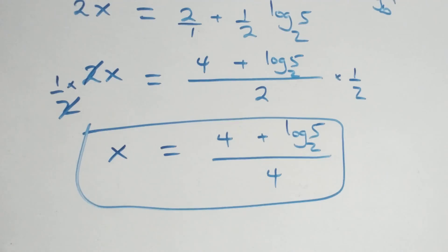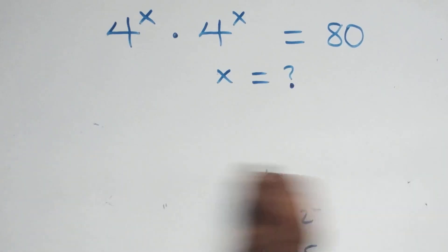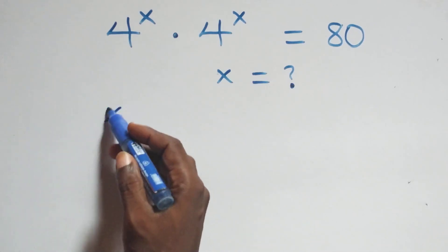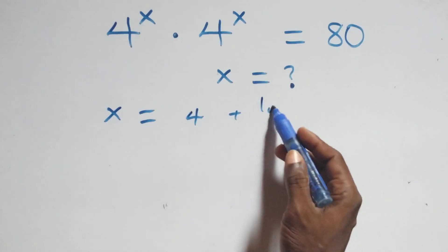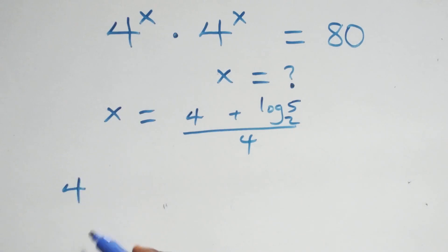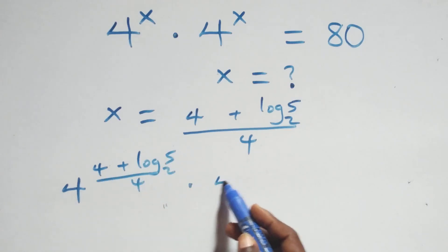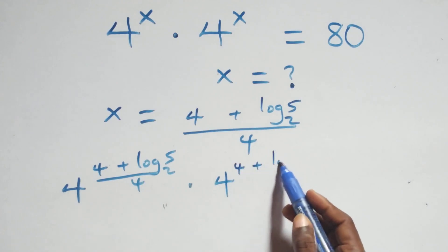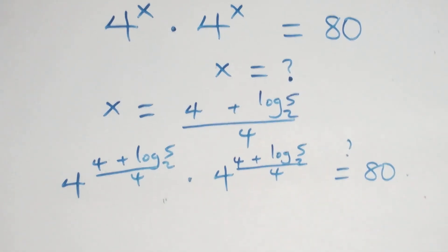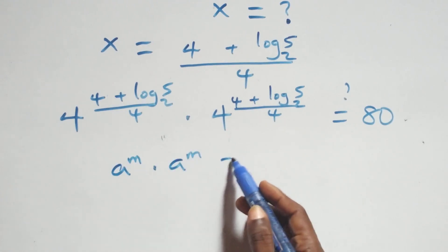That is the value of x: x equals 4 plus log 5 base 2, over 4. Now let's check if this satisfies the given problem by substituting the value of x. Substituting x equals (4 plus log₂5)/4, we have 4 raised to power (4 plus log₂5)/4 times 4 raised to power (4 plus log₂5)/4 equals 80. Since we have the same base multiplying with the same power, a raised to power n times a raised to power n equals a raised to power 2n.